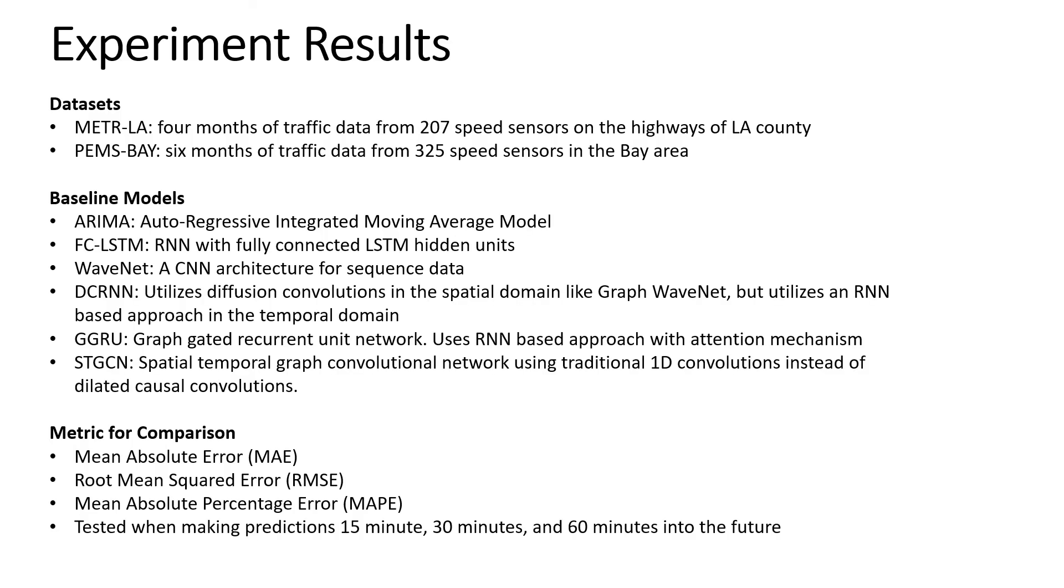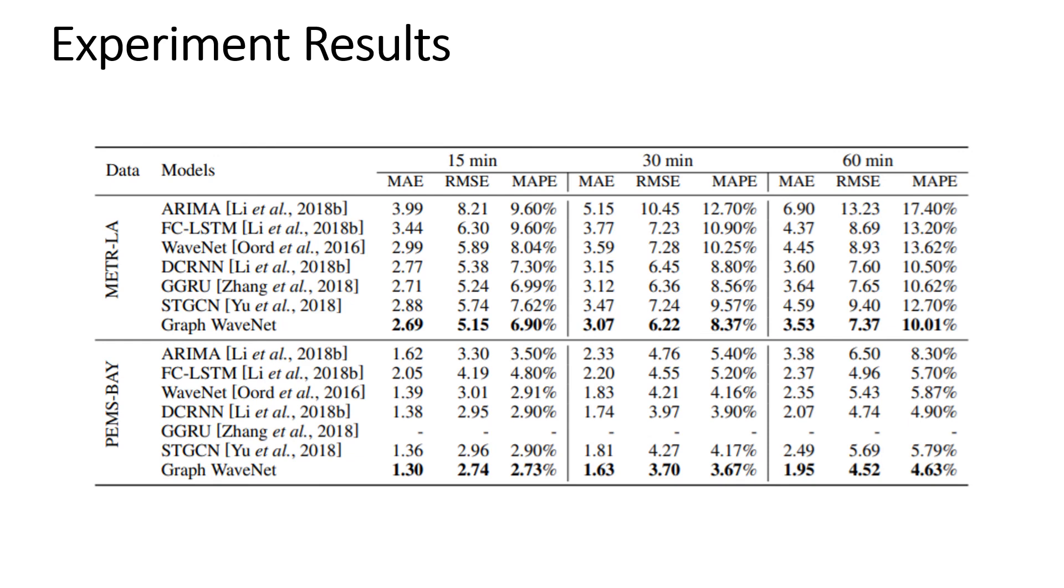So how effective is GraphWaveNet in practice? We have two different benchmark datasets and six different models to compare GraphWaveNet against, and we have three different metrics that we use to evaluate model effectiveness. We'll also test our predictions after 15, 30, and 60 minutes. We can see that GraphWaveNet outperforms all the other models across all experiments. Interestingly, the model outperforms the original WaveNet model with predictions that are as accurate at 60 minutes into the future as the original WaveNet was at 30 minutes. This seems to indicate that the authors were indeed able to leverage the graph format of the data to improve performance.